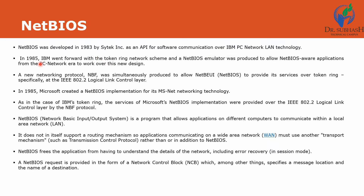Afterwards, in 1985, IBM went forward with token ring. They upgraded their physical topology from LAN to token ring. A NetBIOS emulator was produced to allow NetBIOS-aware applications from the PC network area to work over the new design. A new networking protocol NBF was simultaneously produced to allow NetBIOS to provide its service over token ring, specifically IEEE 802.2 — the Logical Link Control layer.